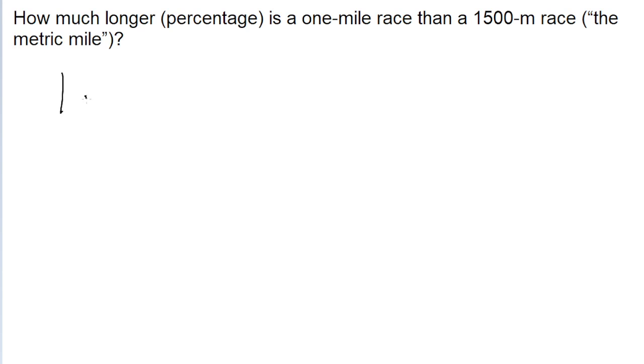So a mile is equal to about 1,609 meters. So a one-mile race is going to be 1,609 minus 1,500 equals 109.